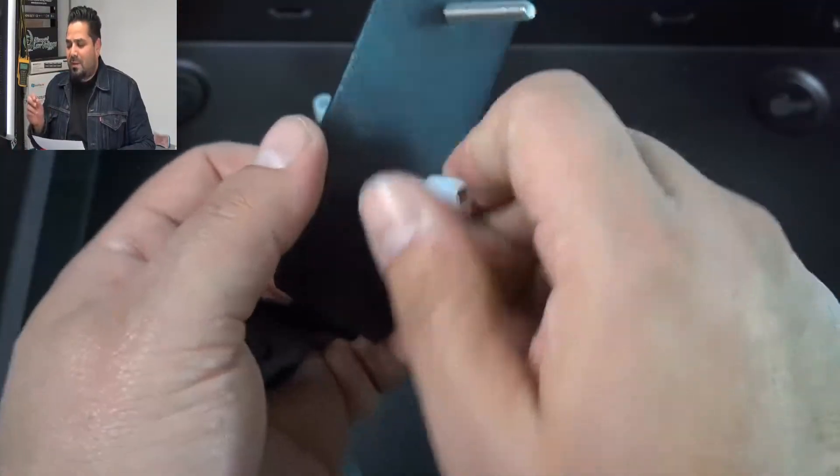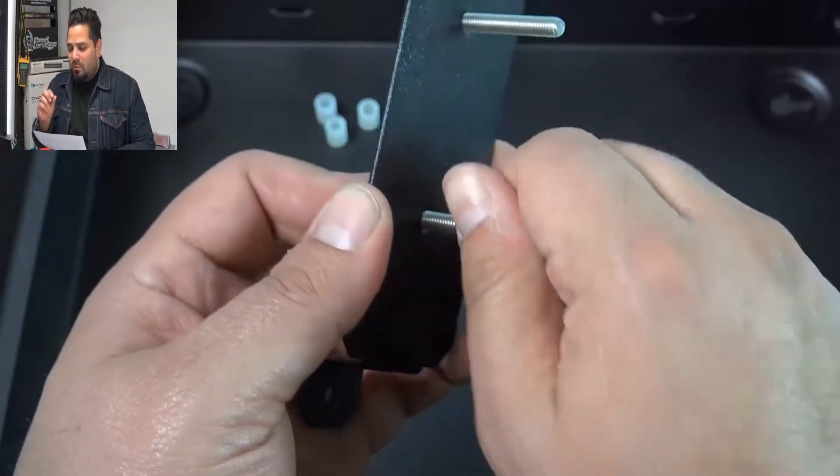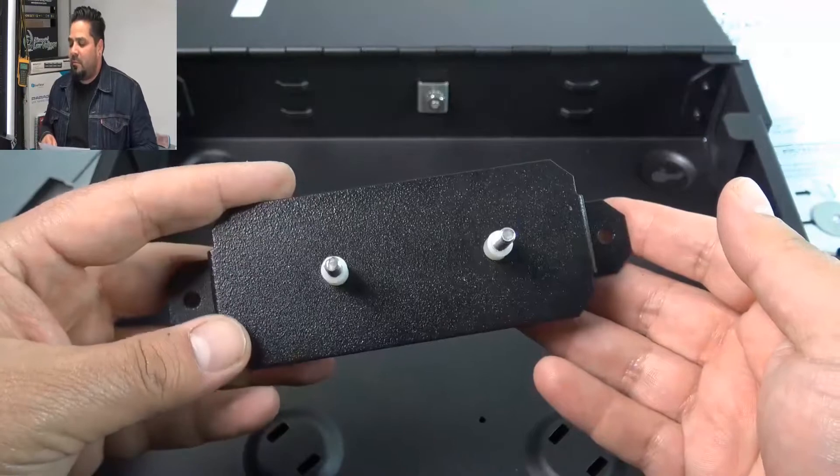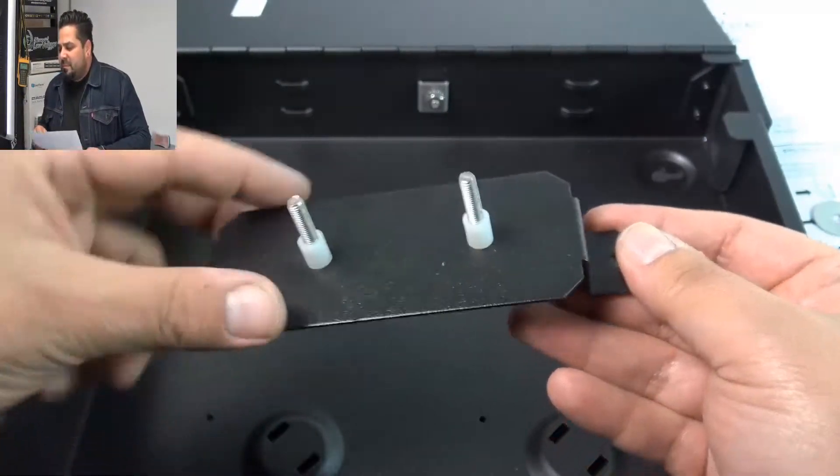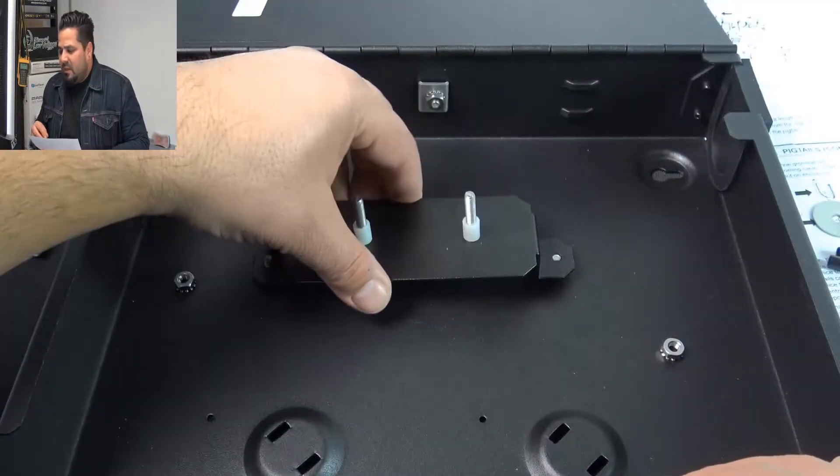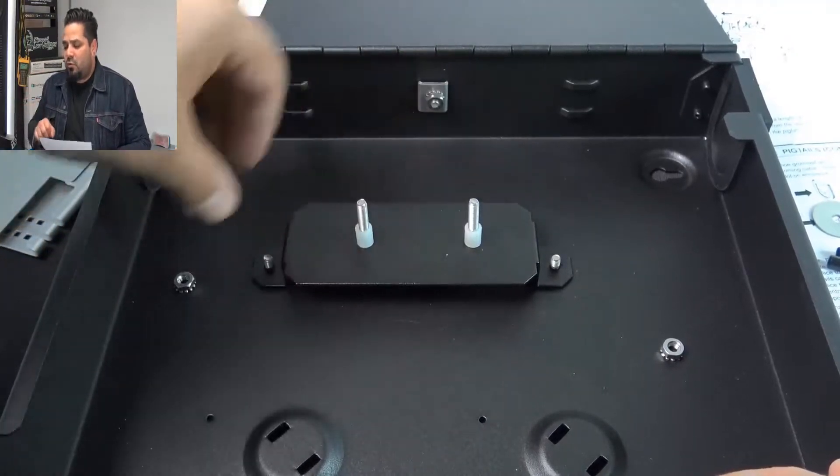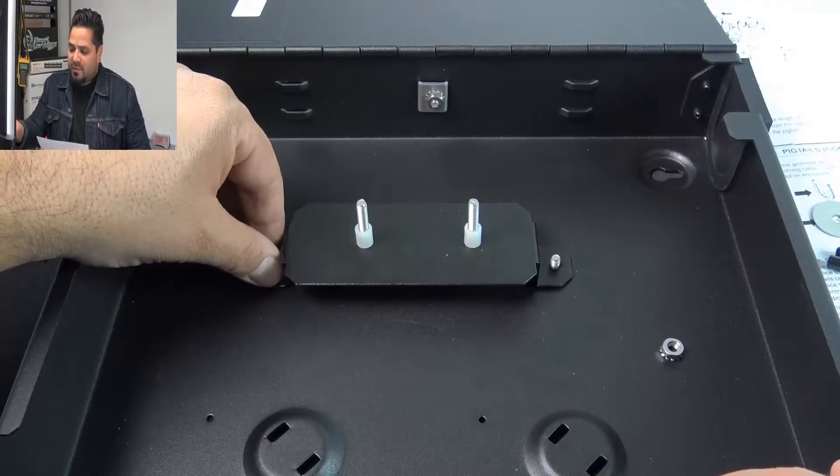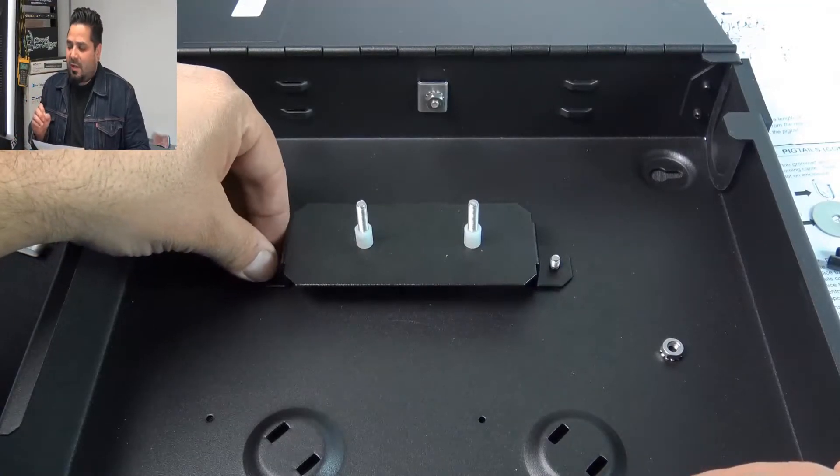Now those post fasteners, those were a little bit of a chore to put on. I had to really give it some oomph to make sure they were on there. Now this video I just put one of the trays on there. If you do two trays, you're going to put two of those post fasteners on each side.